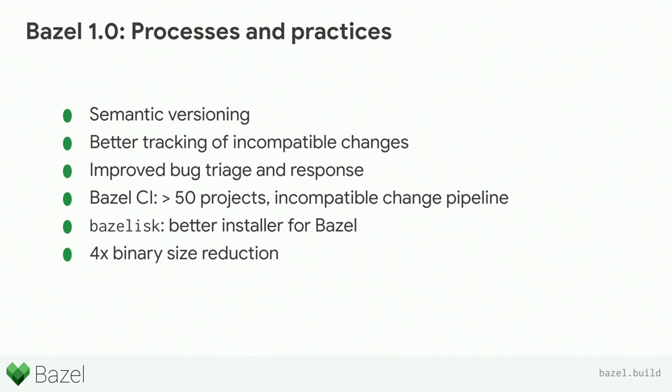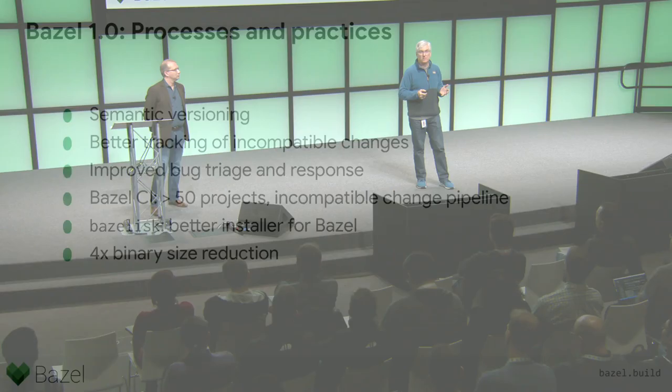We've greatly improved our CI process — it's an open process and you can see our CI online. We've invited folks who want their projects to track against head to onboard into our CI, so we can use that to gauge how well we're doing. We've introduced an incompatible change pipeline to see how potential future changes in the next major release affect you. We have a new installer for Bazel called Bazelisk that lets you control when changes show up. We've also reduced the binary size, making Bazel a more reliable and usable product.